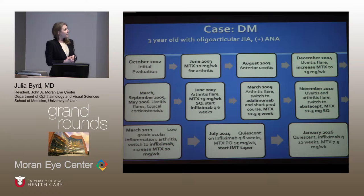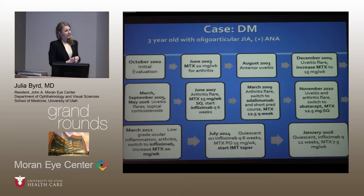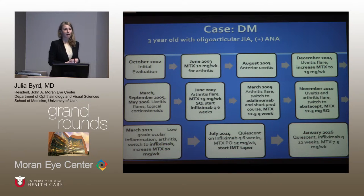This is a three-year-old boy who, when he first presented, had the diagnosis of oligoarticular JIA and he's ANA positive. He was initially seen by ophthalmology in 2002 just for a screening exam for any ocular inflammation, which was found to be negative.